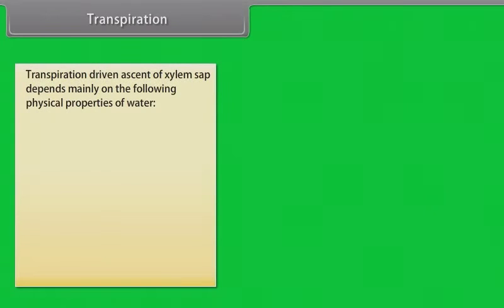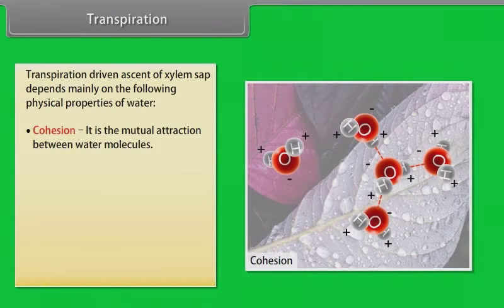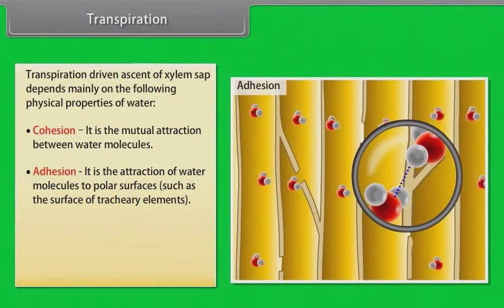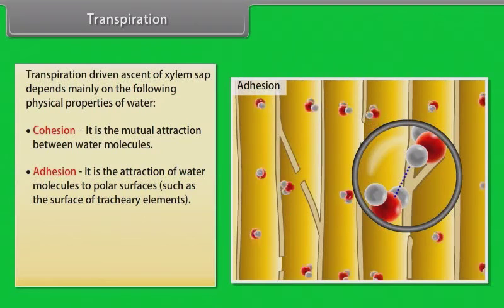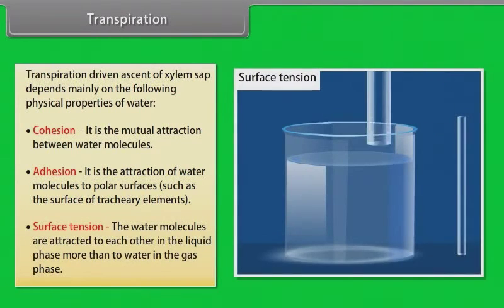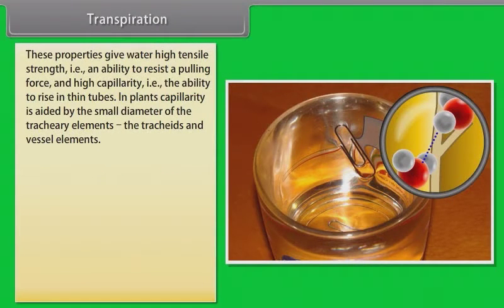Do you know that the transpiration driven ascent of the xylem sap depends mainly on some physical properties of water? These are cohesion, adhesion and surface tension. Cohesion is the mutual attraction between water molecules. Adhesion is the attraction of water molecules to polar surfaces such as the surface of tracheary elements. And in surface tension the water molecules are attracted to each other in the liquid phase more than to water in the gas phase. These properties give water high tensile strength which is an ability to resist a pulling force and high capillarity which is an ability to rise in thin tubes. In plants, capillarity is aided by the small diameter of the tracheary elements, the tracheids and vessel elements.